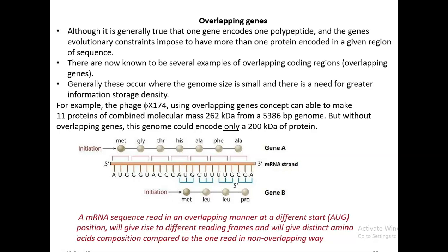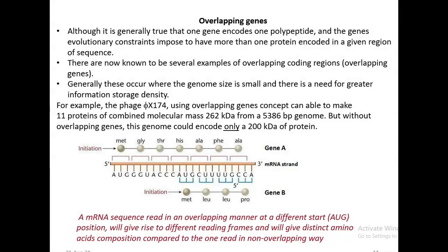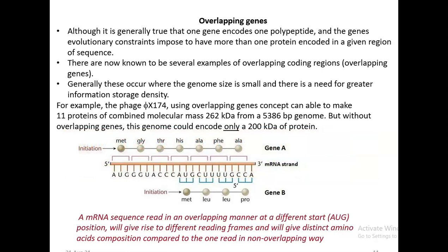A very classical example for the presence of overlapping genes is the phage. Using the overlapping gene concept, this kind of bacteriophage is able to make 11 proteins of a combined molecular mass of 262 kilodaltons from a 5386 base pair genome. For example, if this particular bacteriophage were not going to use the overlapping way of reading the genome, then the particular genome would only code for 200 kilodaltons of protein.